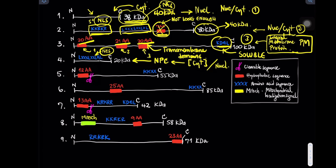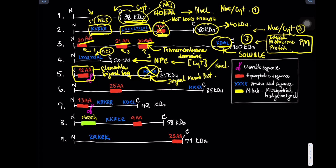Protein number five contains a hydrophobic amino acid sequence near the N-terminus that is cleavable — the typical features of a signal sequence. So this protein will be targeted to the endoplasmic reticulum and once translocated, it will likely be a free-floating soluble protein inside the ER. It contains a sequence toward the carboxyl terminus that acts as a retrieval sequence, but only for integral membrane proteins, not soluble proteins. Therefore, this protein will not be retained at the ER and is very likely to be secreted out of the cell.